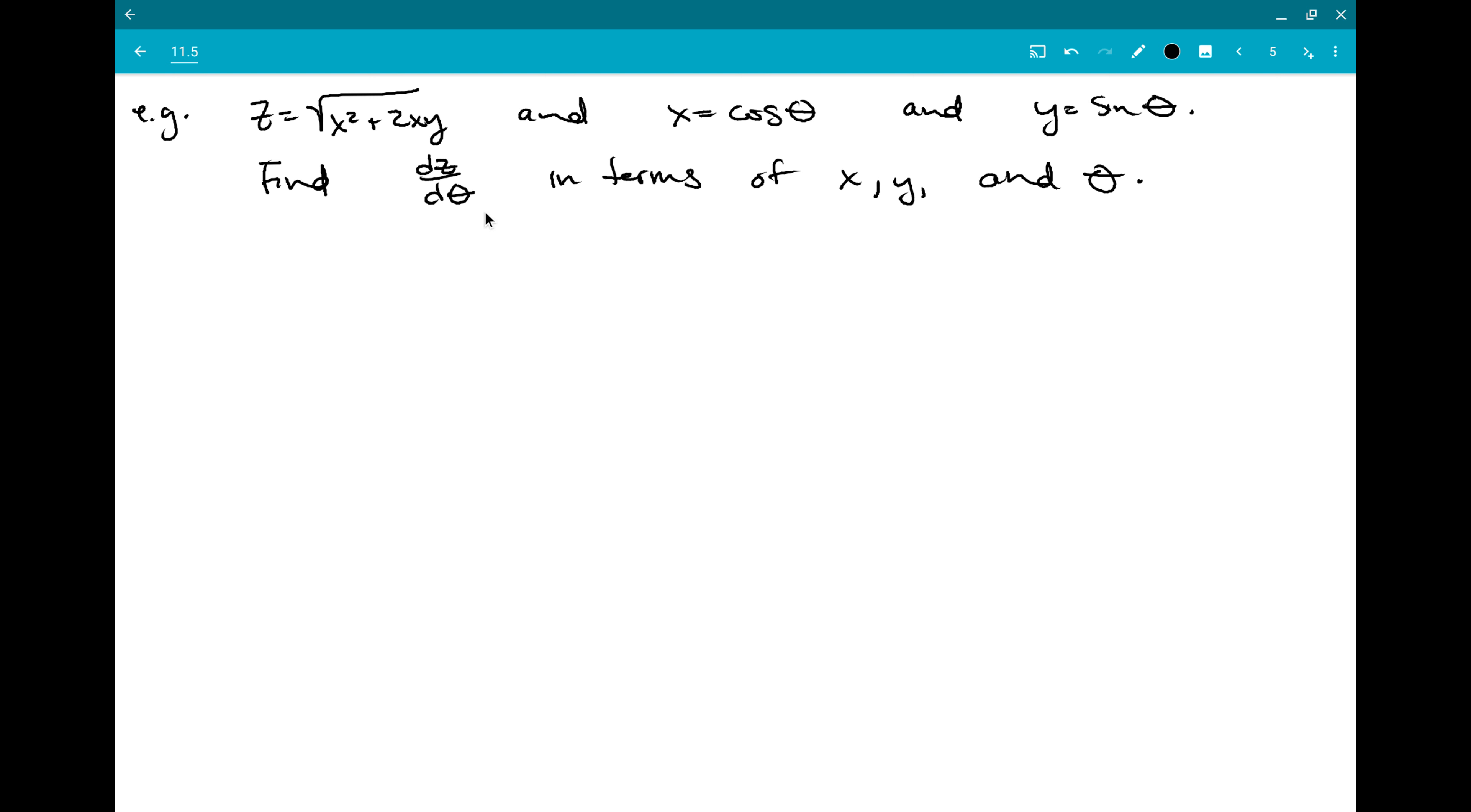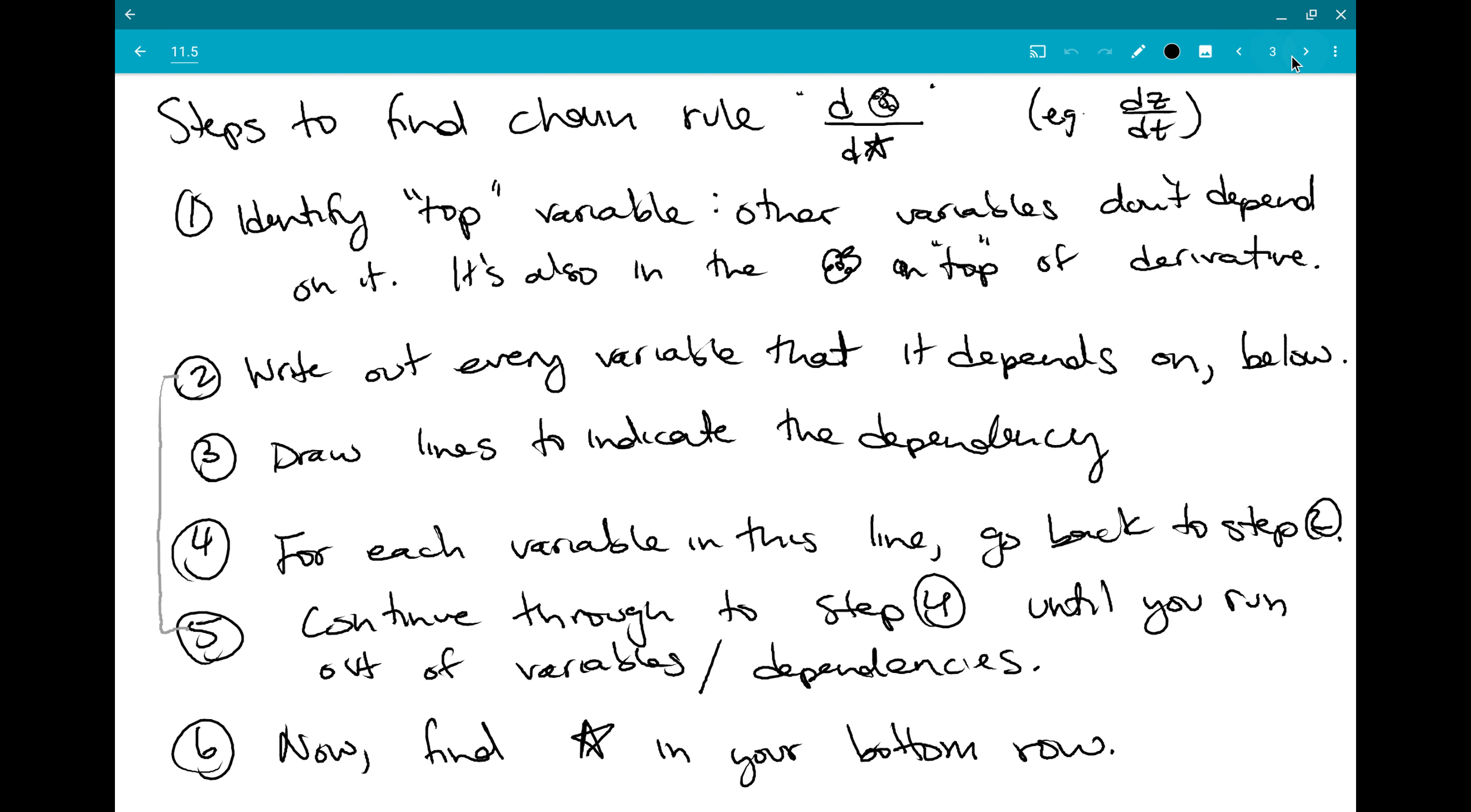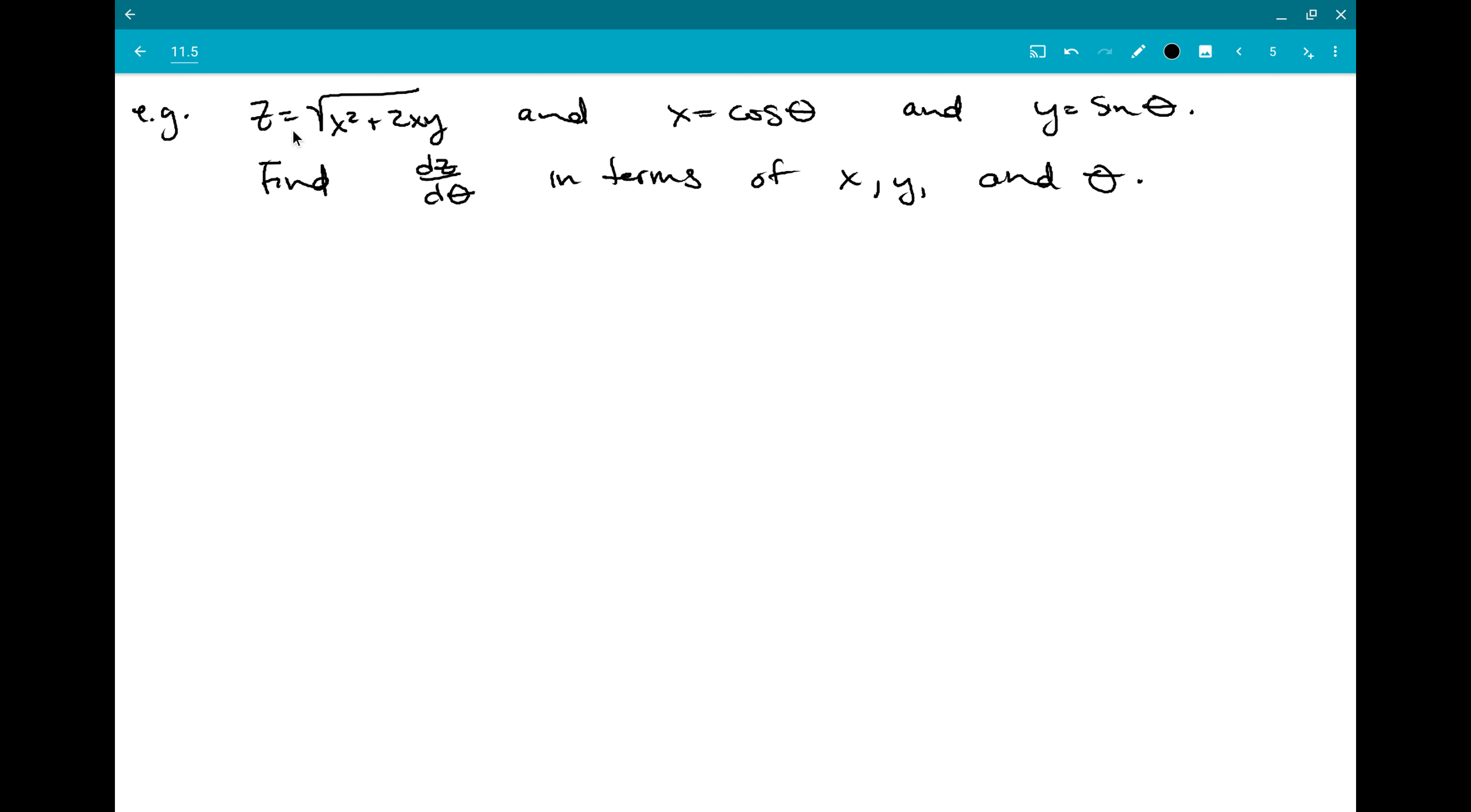The hint that we should be doing a chain rule thing is that I am supposed to find dz d theta, but when I look at my equation for z, I see it depends on x and y, and those depend on theta. So that tells me this is going to be helpful if I can use this rule for chain rules instead of having to plug everything in and then take partial derivatives and all that stuff.